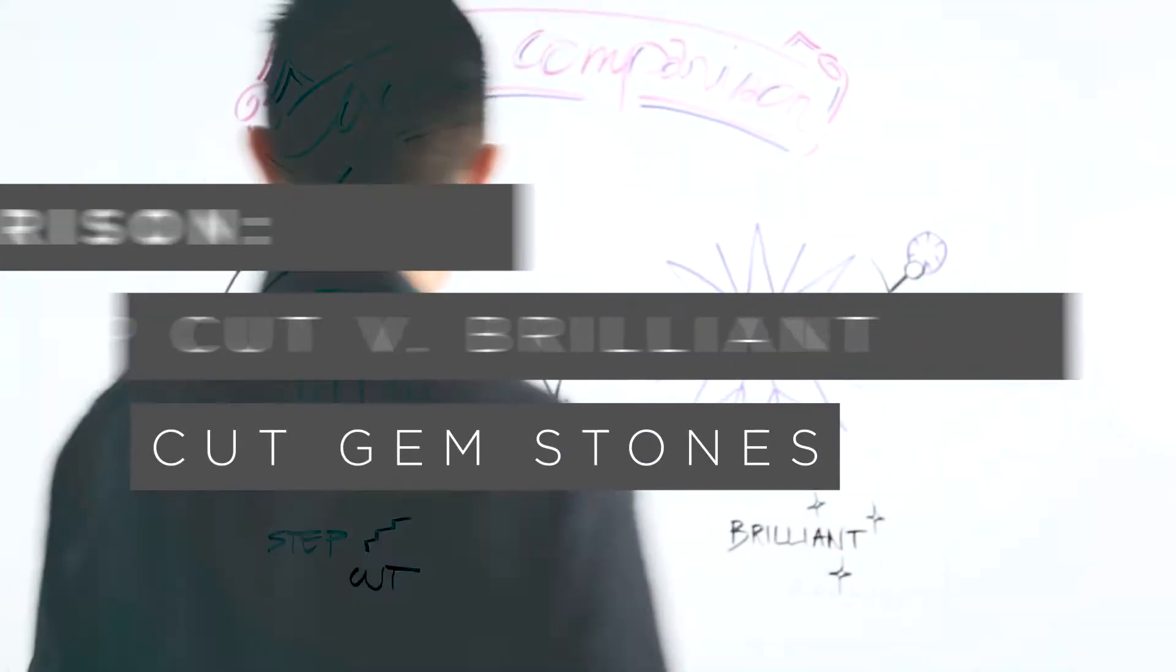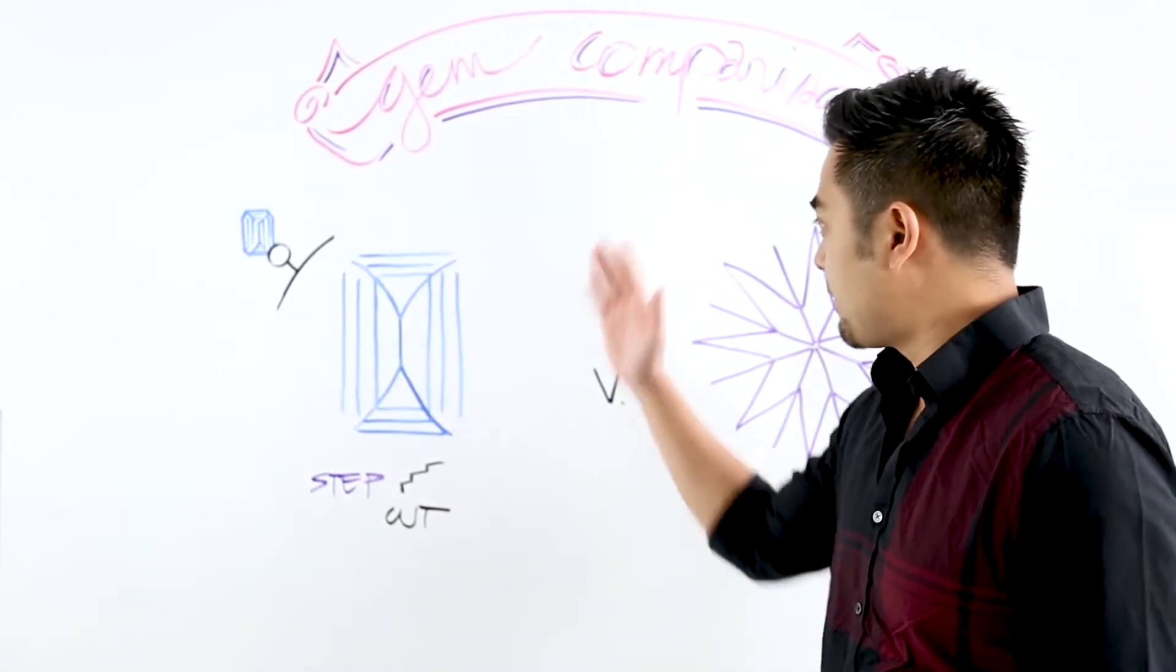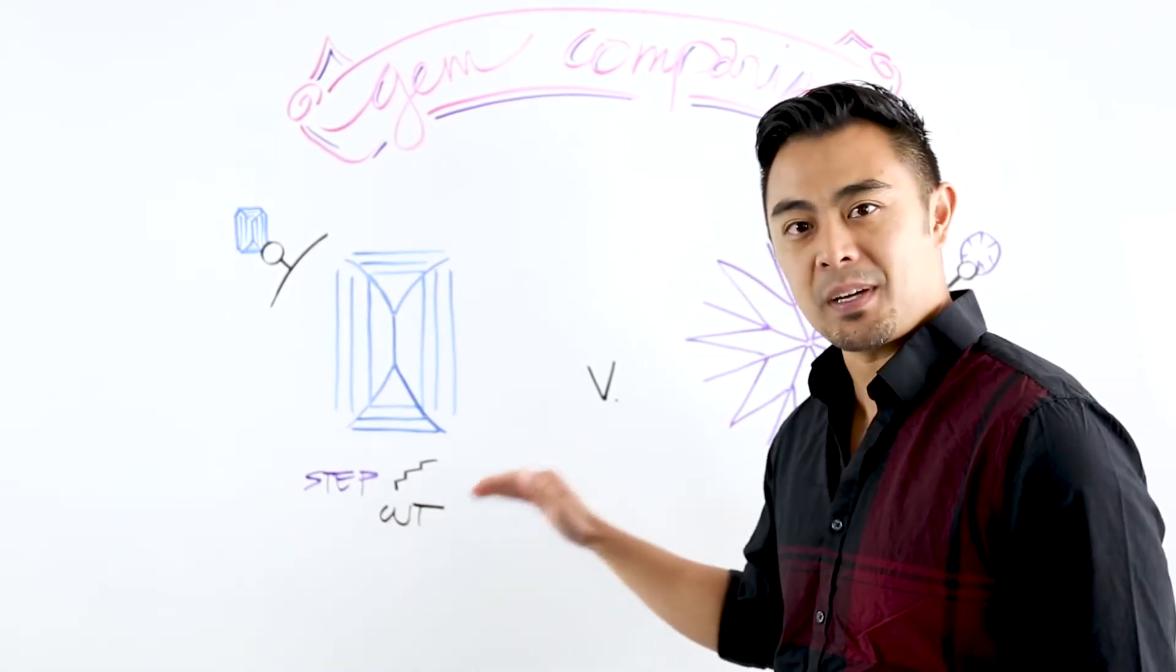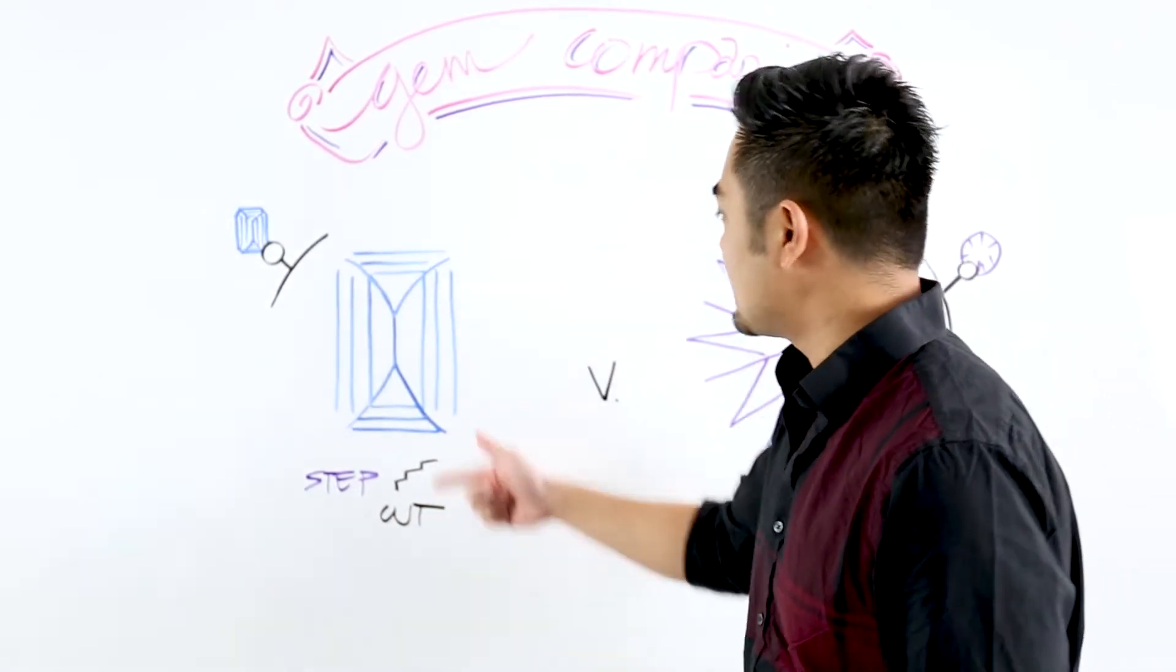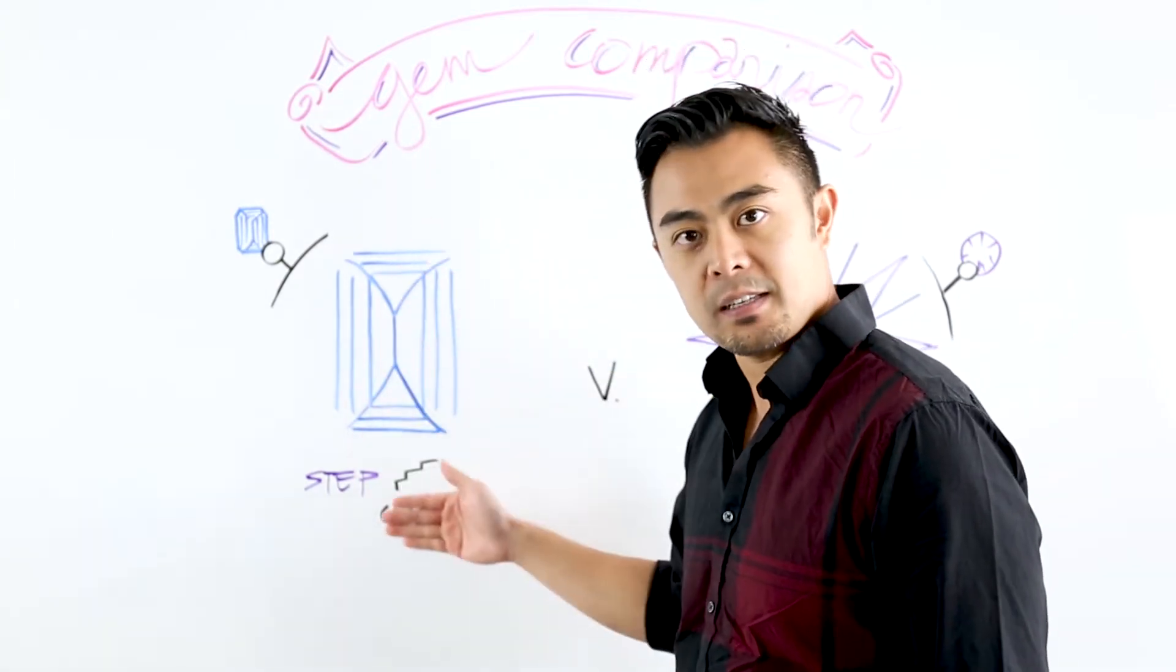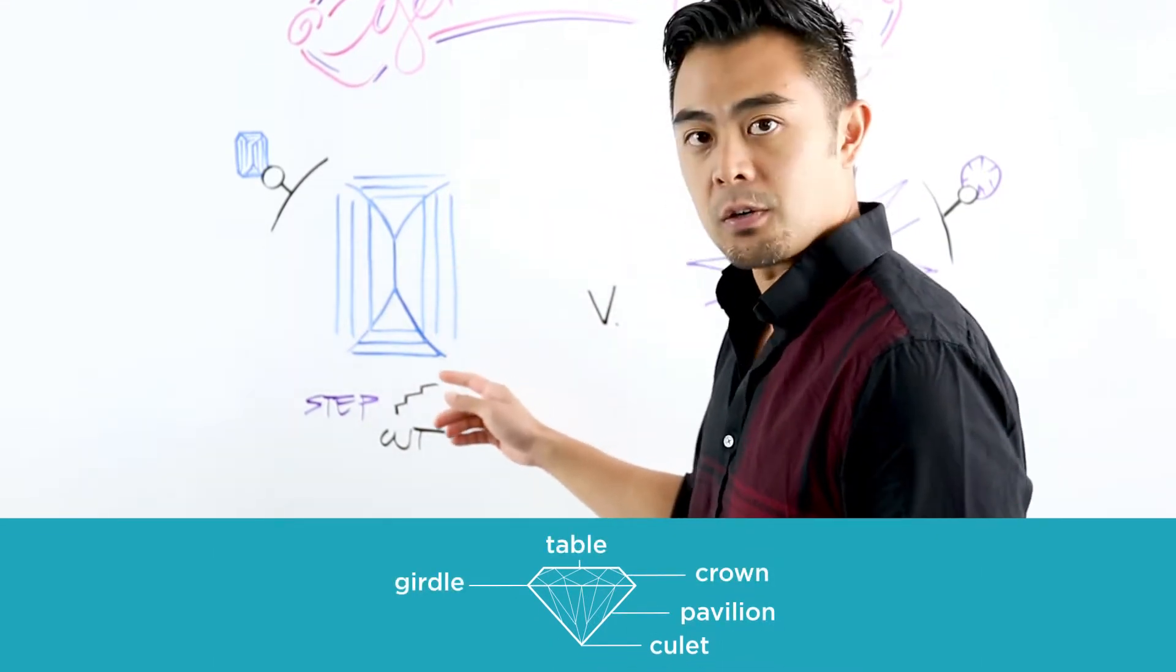So here's the thing, the difference between the two is pretty significant. The first I want to go over is the step cut, and what a step cut basically means is that the facets, the way all the surface areas have been faceted in a gemstone, are going to be parallel to the girdle.